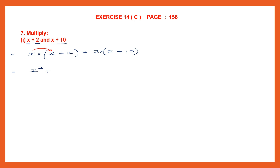Then we multiply x into the second term, x into 10. x into 10 is 10x. Now we go on to the second part — we're going to write plus. Here we have 2 into x plus 10. So first we multiply 2 into x, and then 2 into 10.